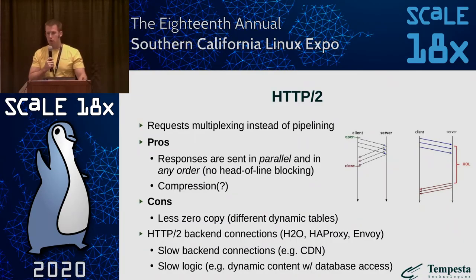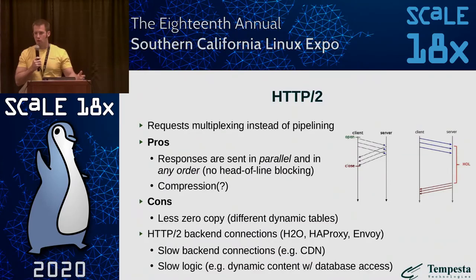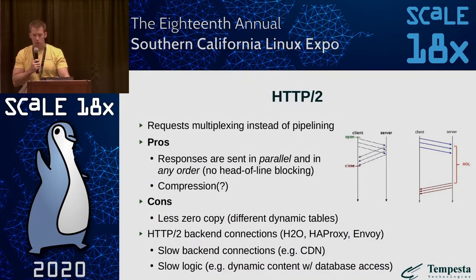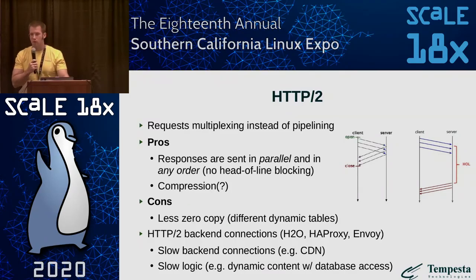HTTP/2 also has header compression, which is good for better network throughput, but we spend more CPU resources on compression and decompression. Another drawback is that since we use decoders, we cannot use zero-copy techniques. Unfortunately, HTTP/2 isn't common for upstream connections. It seems that Nginx isn't planning to implement HTTP/2 for upstreams. H2O, HAProxy, and Envoy already have HTTP/2. Apache Traffic Server is going to implement it, and so are we.